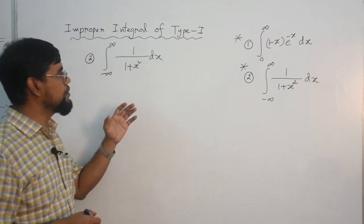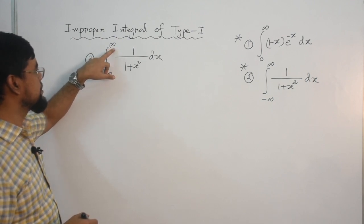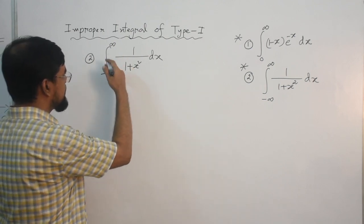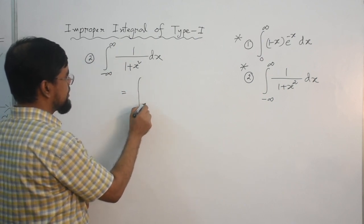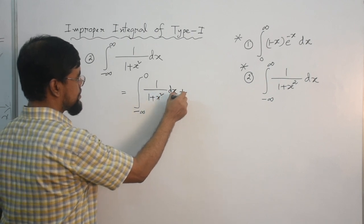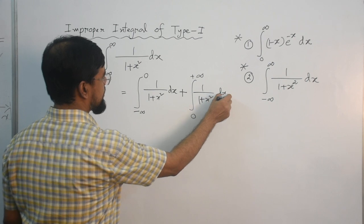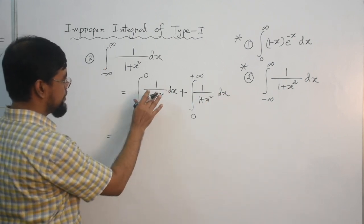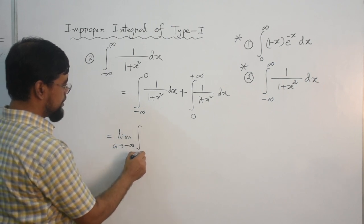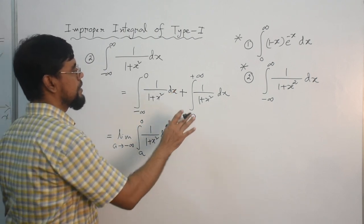Now let us evaluate the second example, which is our last example in this lecture. You can see the lower limit is negative infinity and upper limit is positive infinity. So how can we evaluate this? I said you need to consider a finite number between negative infinity and positive infinity — let us consider 0. So I divide this integral into two parts: from negative infinity to 0 of 1/(1 + x²) dx, plus from 0 to infinity of 1/(1 + x²) dx. Now the first integral is still improper, and by definition we evaluate it as limit as A tends to negative infinity of the integral from A to 0 of 1/(1 + x²) dx plus the second part.